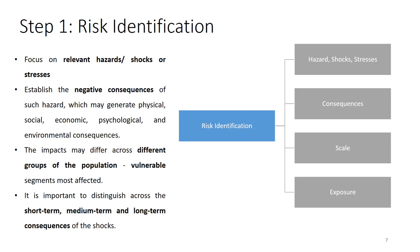Within risk identification, you need to identify the relevant hazard, look at consequences, and consider scale and exposure — who is exposed (women, young people, the most vulnerable) and what is the scale (communities, a specific region, groups, households). Risk identification also requires looking at the consequences of shocks in the short, medium, and long term, as this is a crucial step in the process.